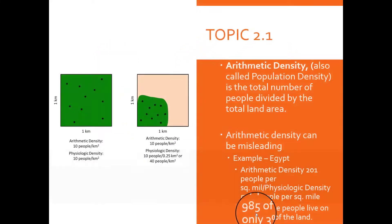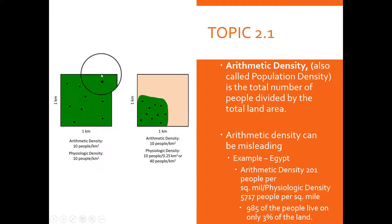Arithmetic density is pretty much the same thing as population density. It's the total number of people by the total land area. For example, if the land area is just one square kilometer or one mile, and the dots represent people, if there are 10 dots on that piece of land, then we can say that the population density is 10 people per square mile.